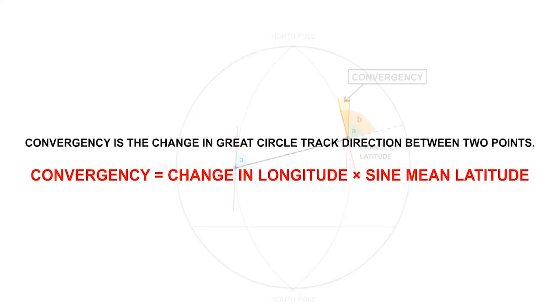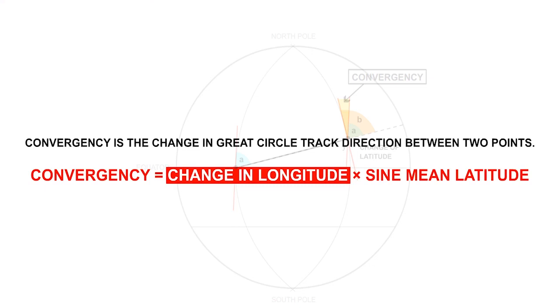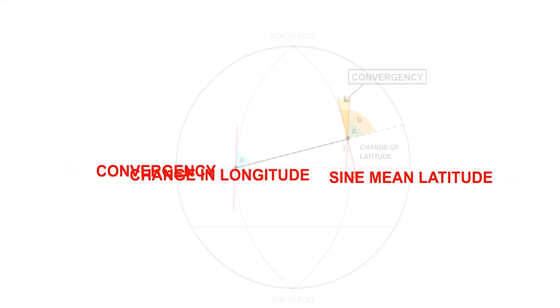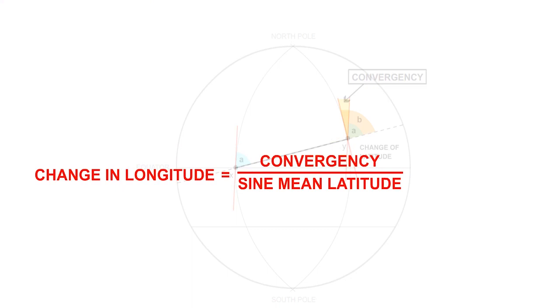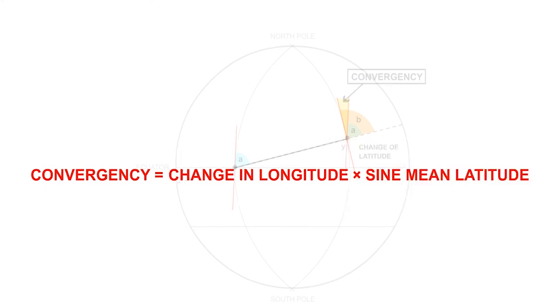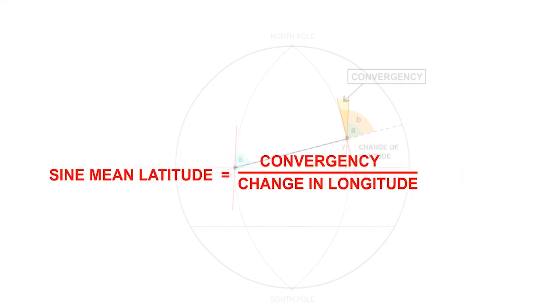What we have just found is the basic convergency equation. However, you may get questions which require you to transpose it. For instance, in one of the examples which follows, you will have to calculate the change of longitude. So you will have to make it the subject of the equation. You could also be asked to calculate the mean latitude. It's only a simple transposition.